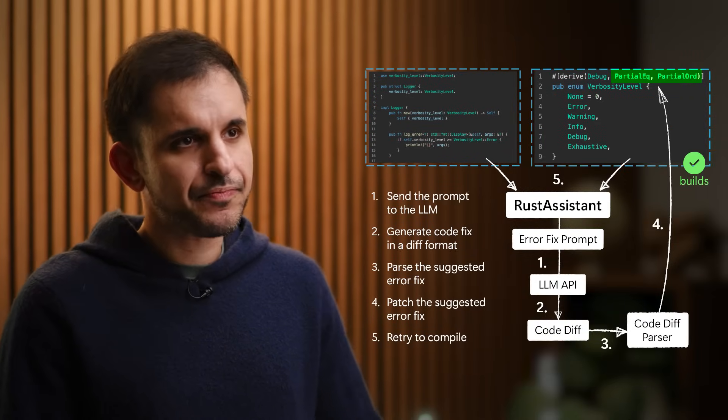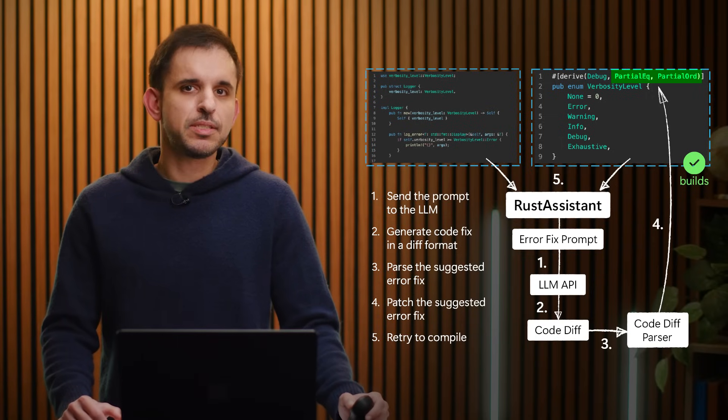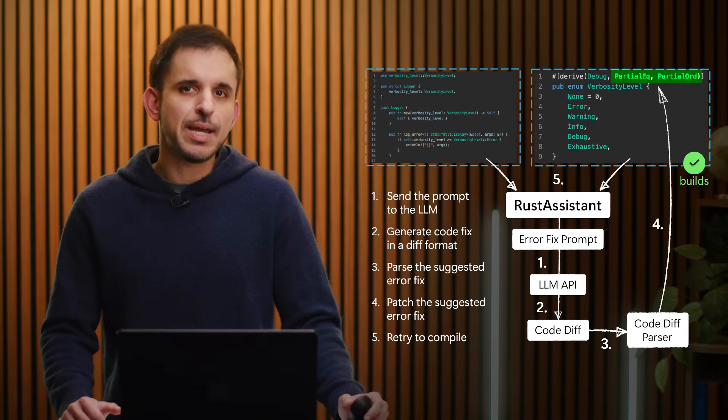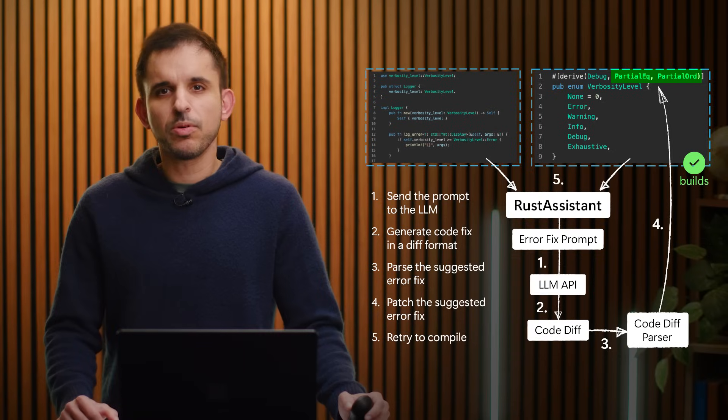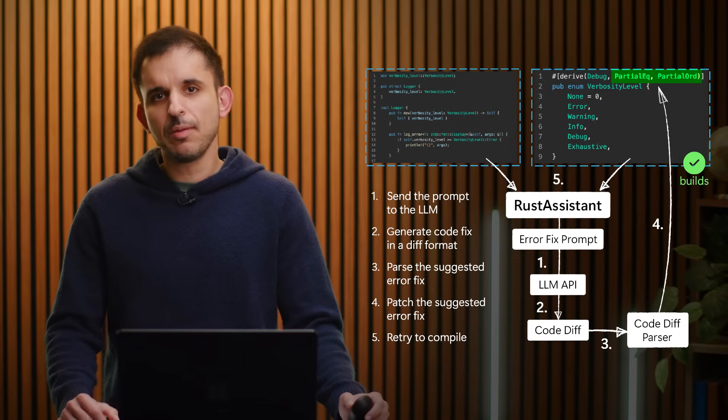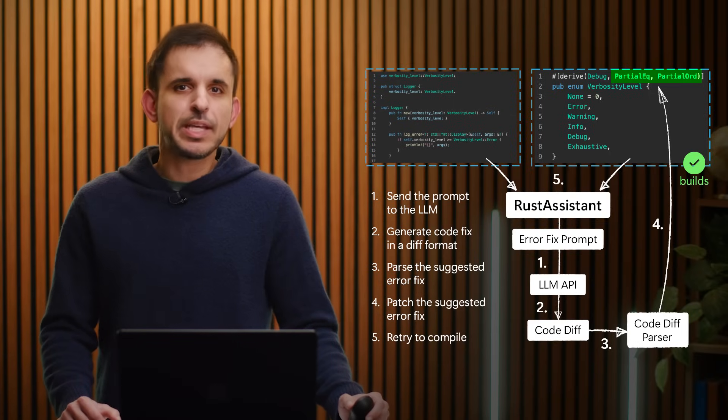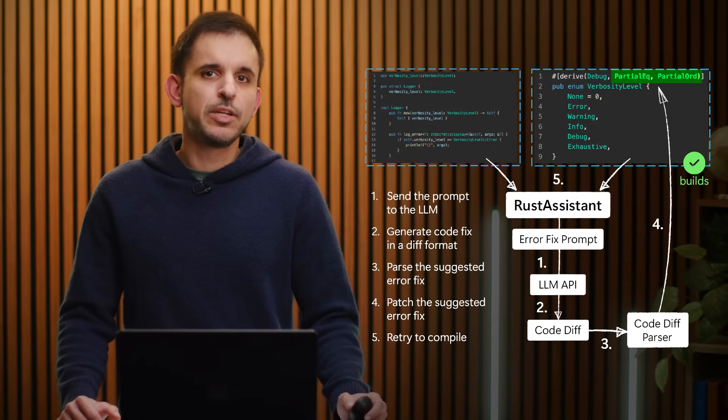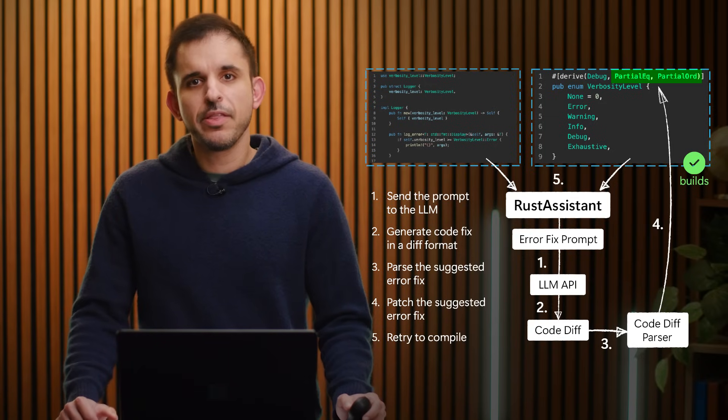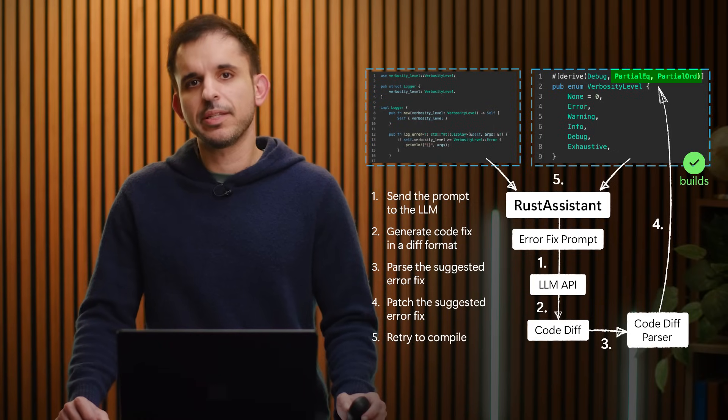Now let's move to the last step. Here Rust Assistant sends the carefully localized prompt, which includes the error details and the relevant code snippets to the large language model API. The LLM generates a proposed fix, formatted as a code diff, in other words does not include the entire code snippet for efficiency, but only the new, edited or deleted code lines. For example, in the case of our build error, the LLM suggests adding the missing trait to the enumeration, as shown here on the screen. This fix ensures that the comparison using the greater or equal operator will now work as intended.